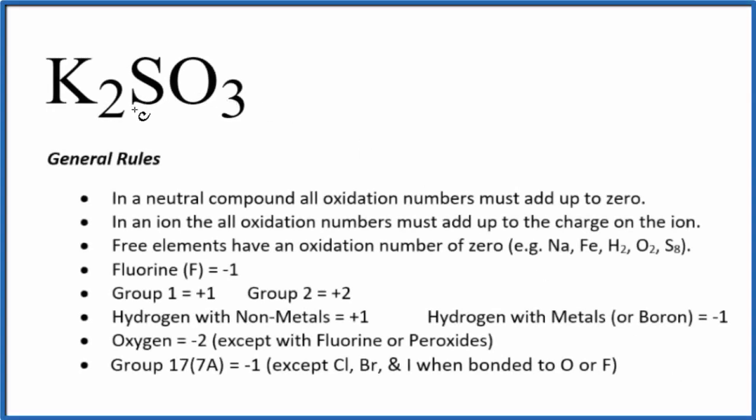To find the oxidation numbers for each element in K2SO3, this is potassium sulfite, we'll use these rules here. First off, there's no negative or positive sign after K2SO3, so this is a neutral compound. All the oxidation numbers are going to add up to zero.